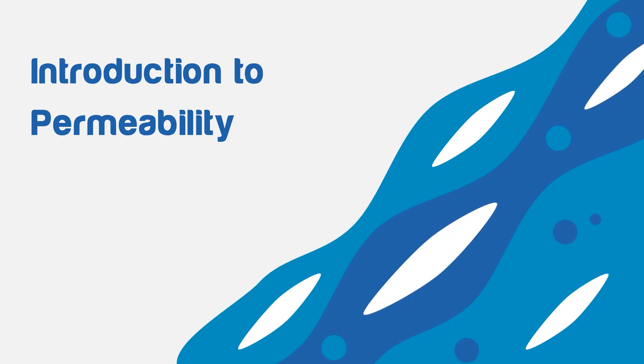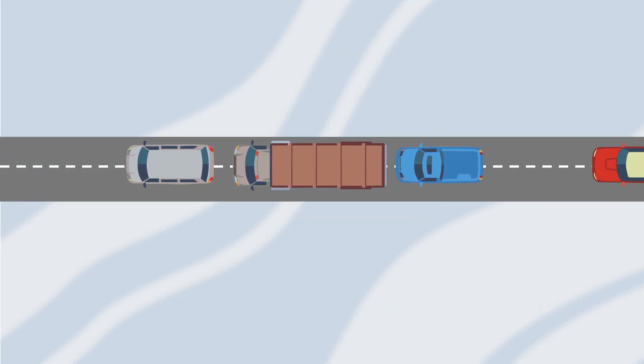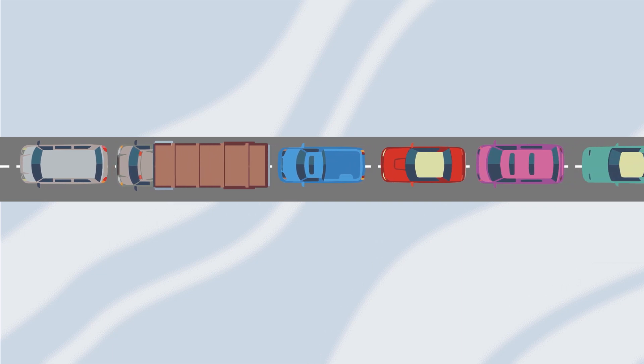Permeability as a concept is similar to that of cars on highways. Imagine that there is a highway with only one lane and there are several cars that need to pass through it. The flow of cars will be difficult as there is limited space to pass through it.